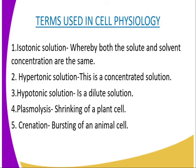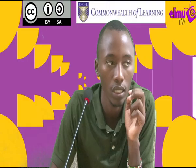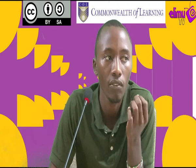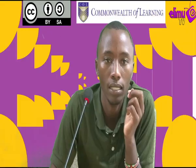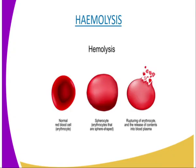If a cell is placed in a hypotonic solution, which is a dilute or lowly concentrated solution, it will gain water from that solution and it is going to burst. We are seeing this haemolysis on our diagram on screen — the bursting of a red blood cell because it has been placed in a hypotonic solution. When placed in that hypotonic solution, it will absorb water and eventually burst.